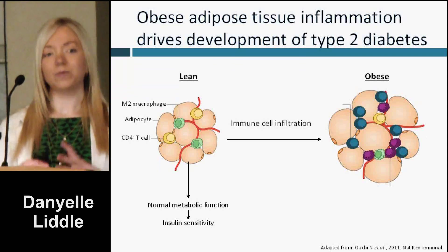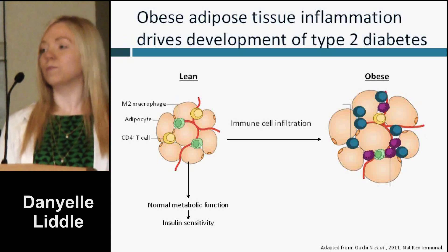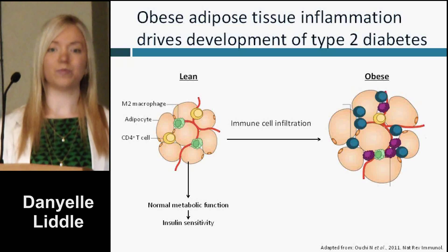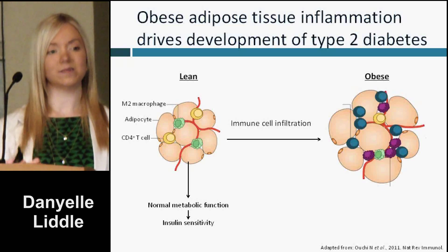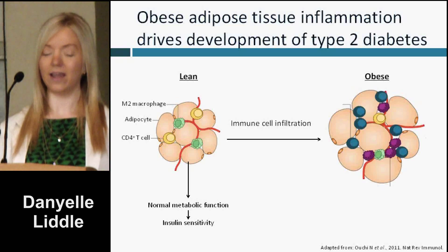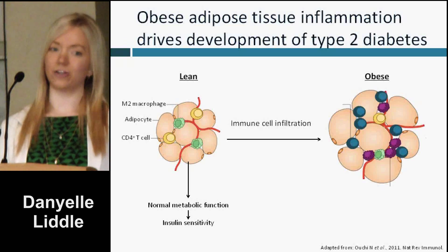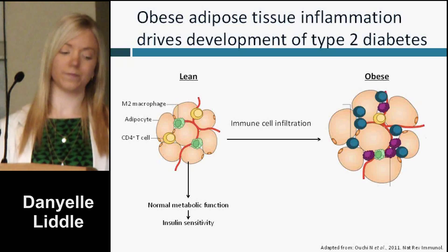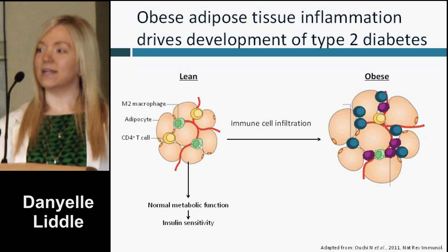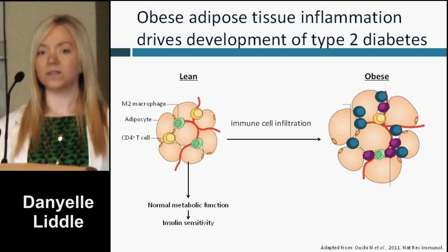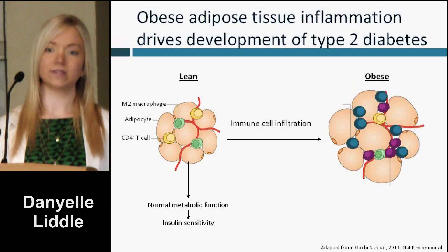This is a topic of major concern because the inflammation that underlies expanding adipose tissue drives the development of chronic diseases, in particular type 2 diabetes. In lean, healthy adipose tissue, there are adipocytes and immune cells that work together to maintain normal adipose tissue function as a storage depot for excess energy in response to postprandial insulin.